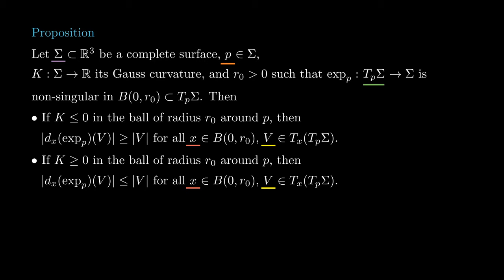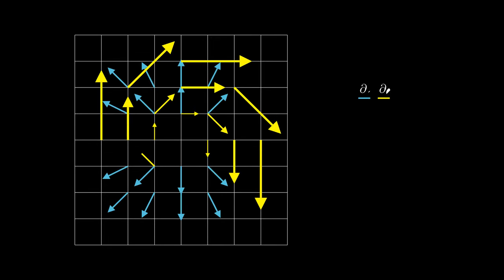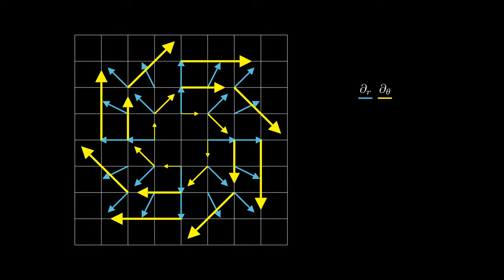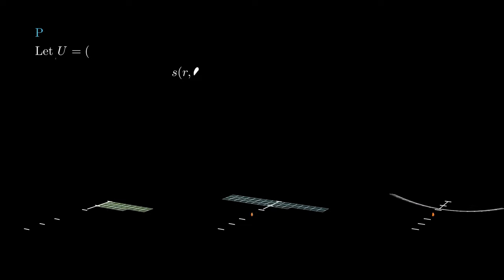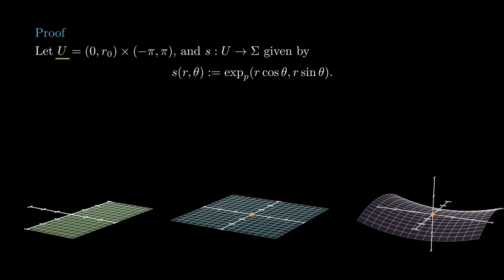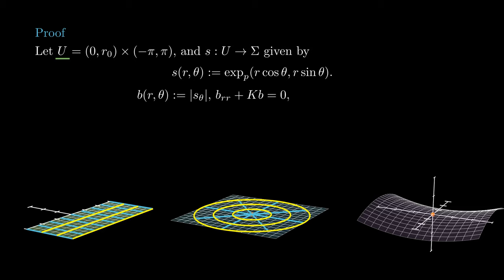This will turn out to be just another consequence of the Jacobi equation. Before going into the proof of this proposition, we recall that polar coordinates on a plane induce two vector fields partial r and partial θ. At each point, the length of partial θ is exactly r, so if we consider the vector field 1 over r times partial θ, we obtain a unit vector field that winds around the origin. Let U be the rectangle in the r-theta plane given by (0, r0) times (-π, π), and set up a coordinate system in which p is the origin and Tp sigma is the xy plane. Then let s be the map from U to sigma given by the composition of the polar coordinate map with the exponential map. By our hypothesis, the map s is non-singular, so the Jacobi equation holds.